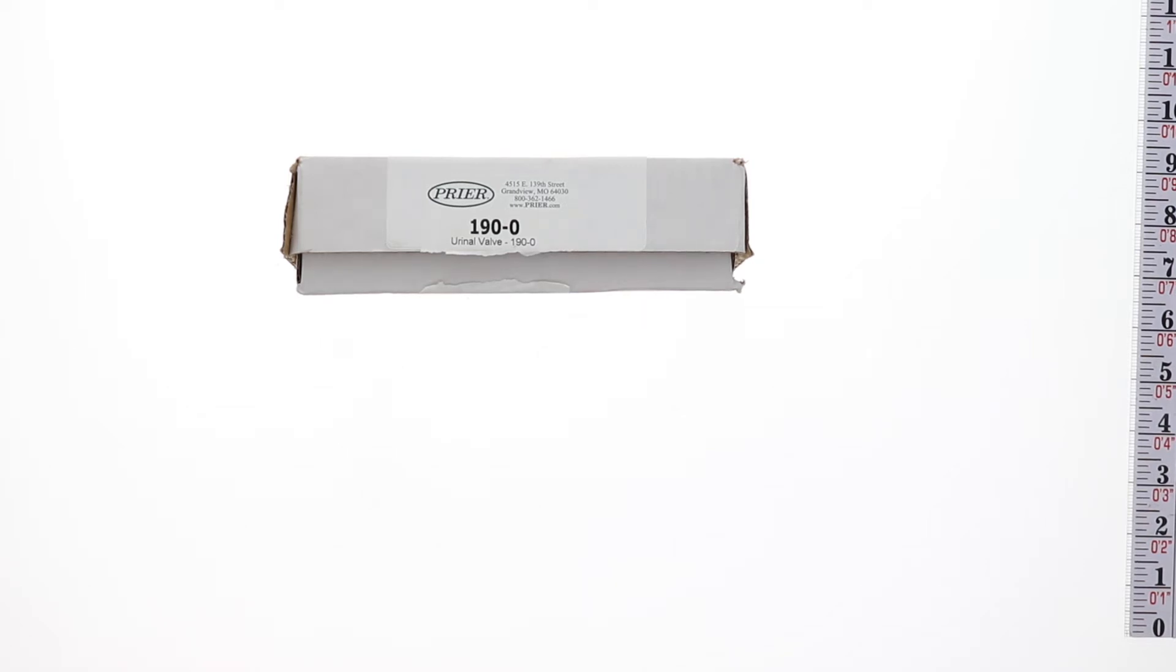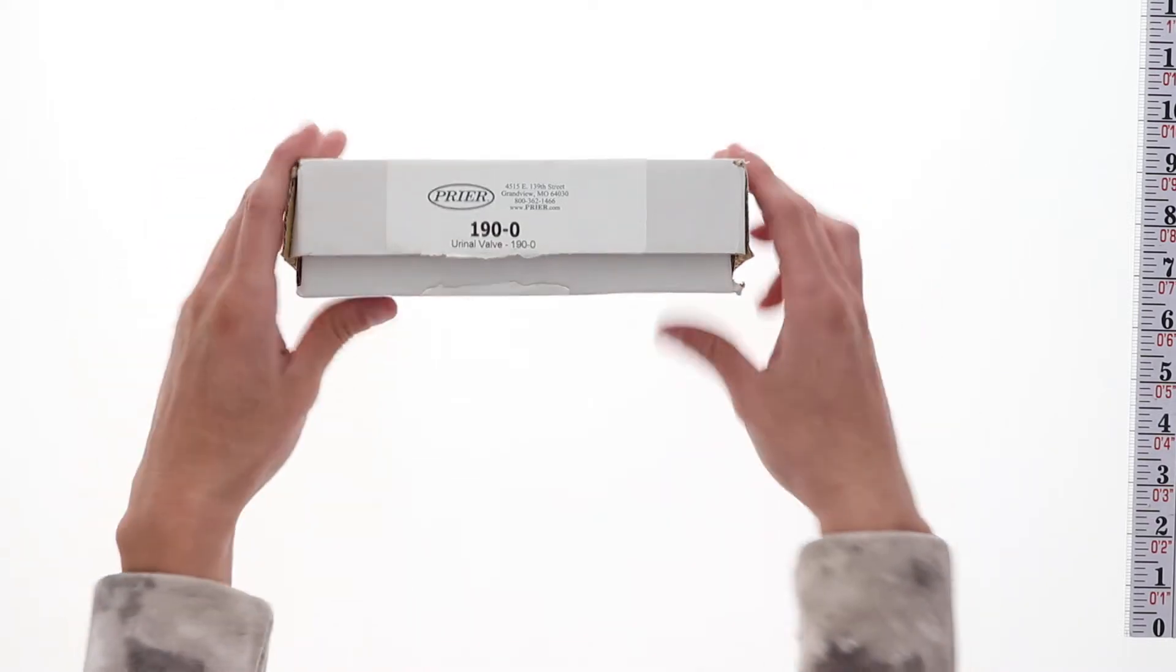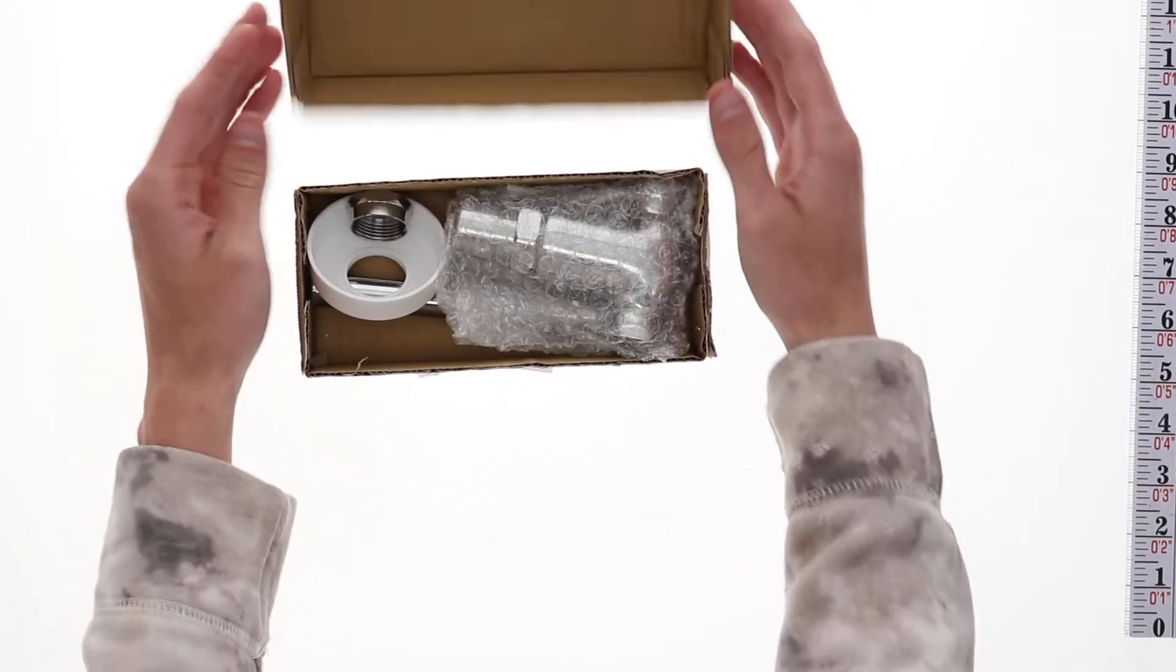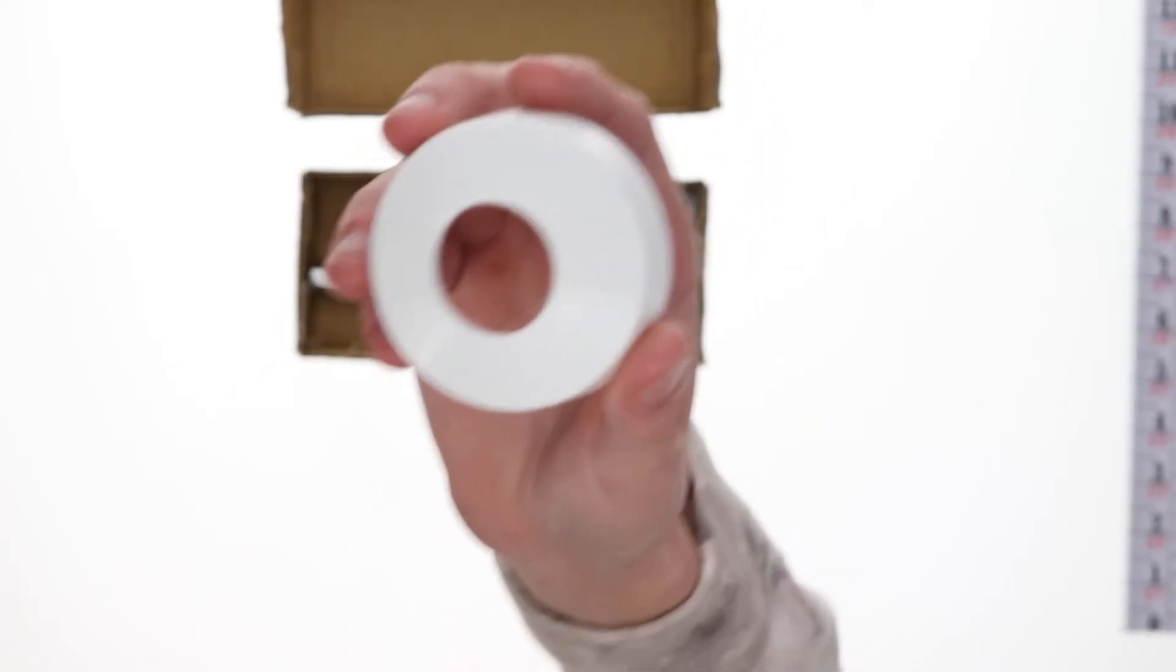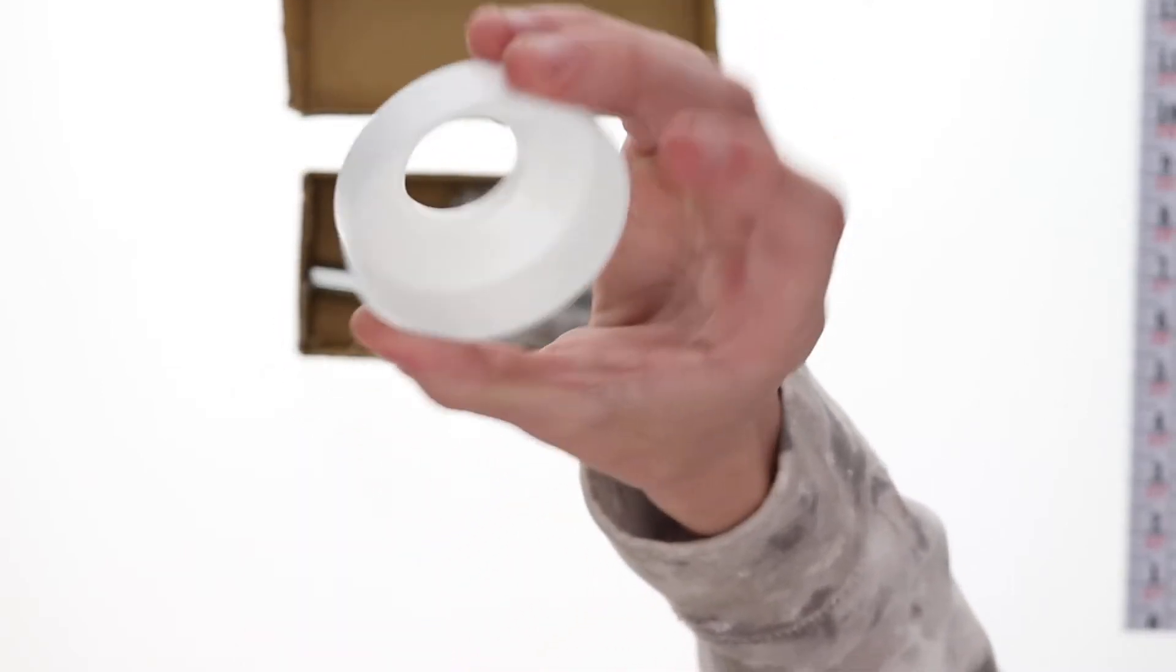This is a look at the Genuine Mansfield by Pryor, 1/2 inch by 3/8 inch, one-line urinal line. It comes with a white escutcheon here.